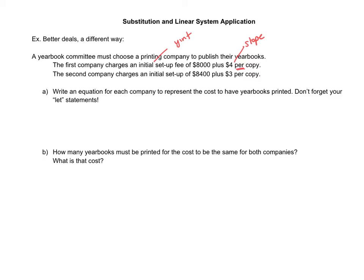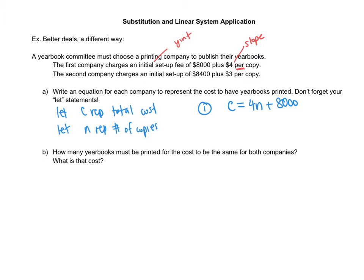Write an equation for each company to represent the cost to have yearbooks printed. We're always going to have C for cost, and since this is per copy, the other variable will be the number of copies. Let C represent total cost and let N represent number of copies. For the first company, our equation will be C = 4N + 8,000, and for the second company, it's C = 3N + 8,400.